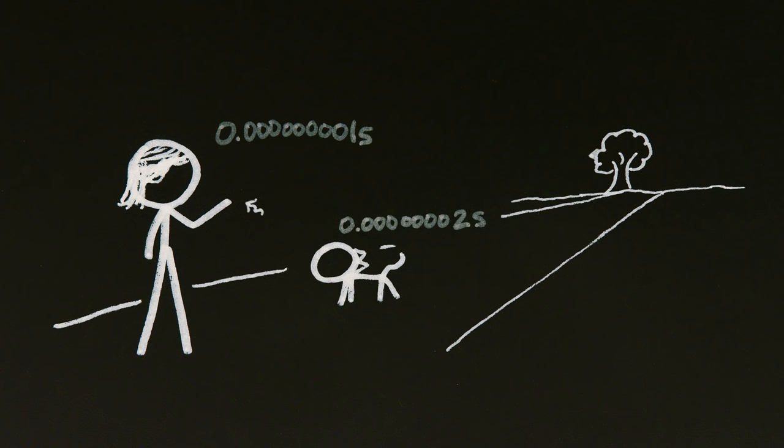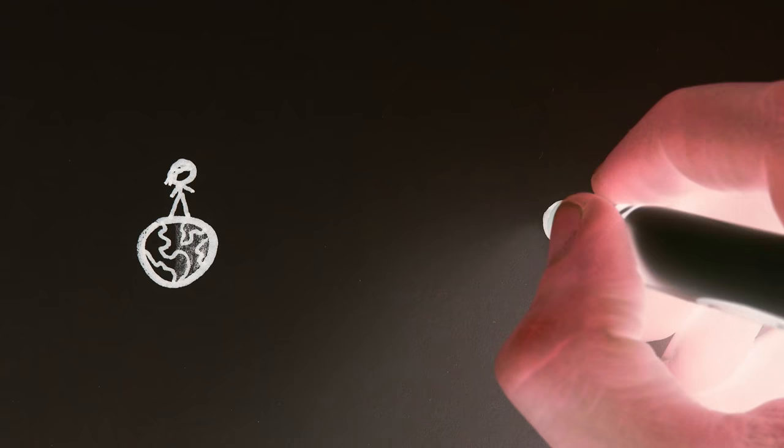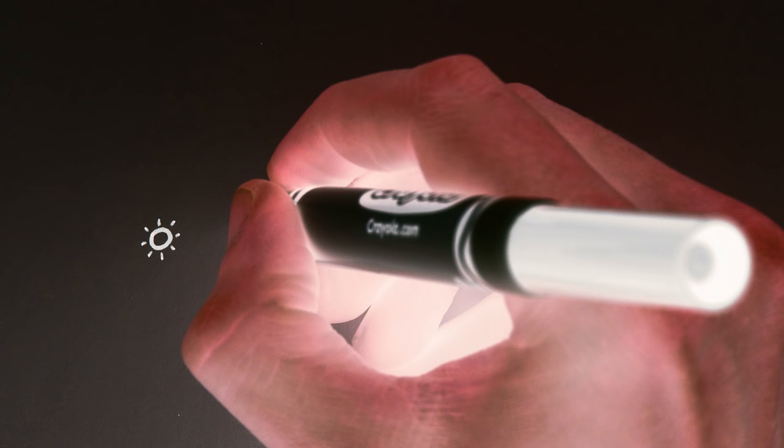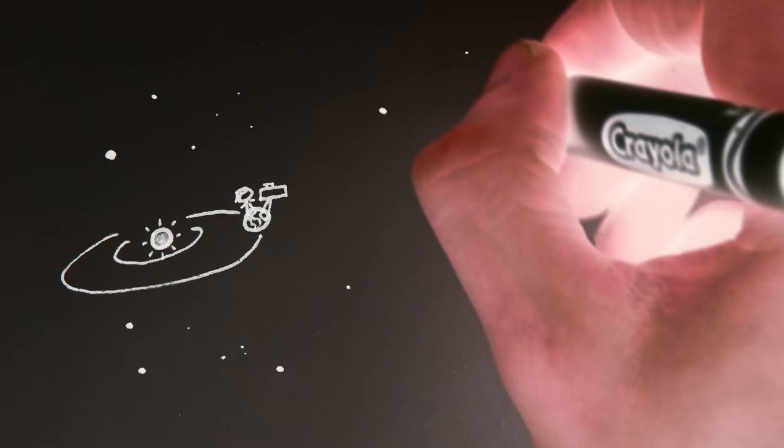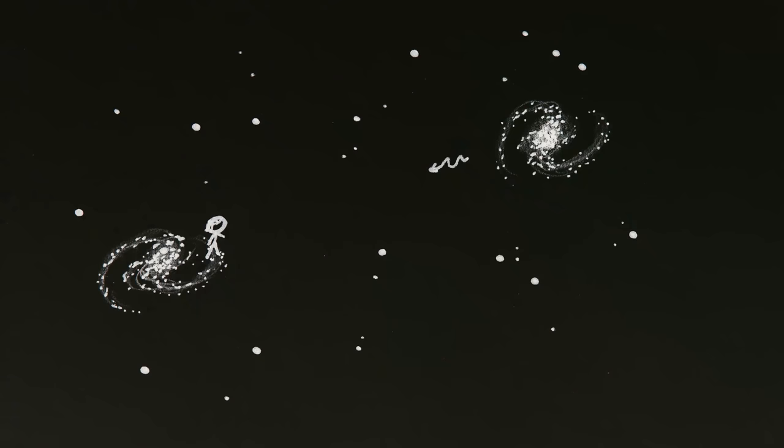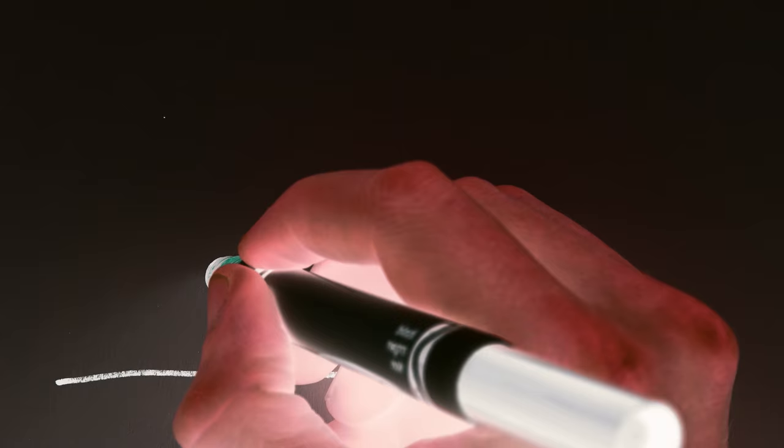The farther away in space, the more ancient in time. You can't see the sun as it is now, but you can see it as it was about eight minutes ago. You can't see Alpha Centauri now, but you can see it 4.4 years ago. You see the Andromeda Galaxy as it was 2.5 million years in the past. And so on.